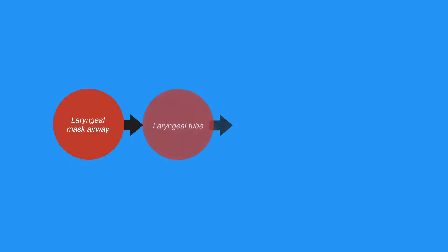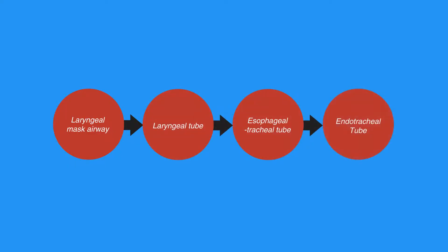Advanced airway equipment includes the laryngeal mask airway, laryngeal tube, esophageal tracheal tube, and endotracheal tube. Different styles of these supraglottic airways are available. If it is within your scope of practice, you may use advanced airway equipment when appropriate and available.